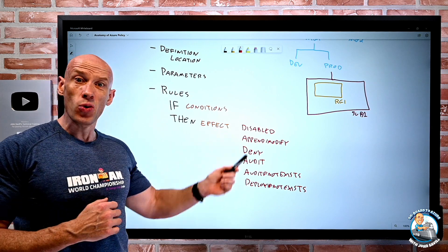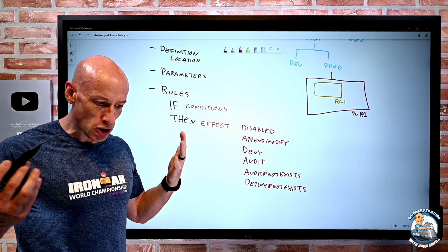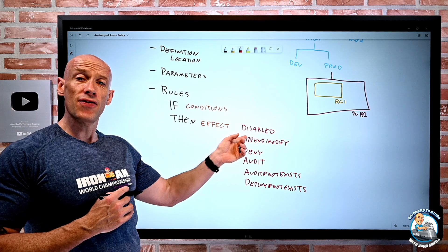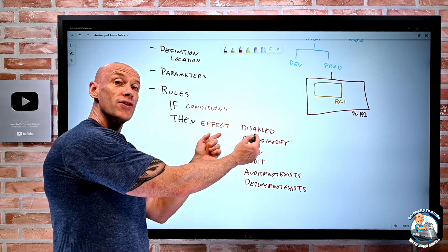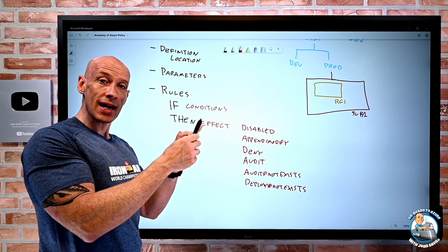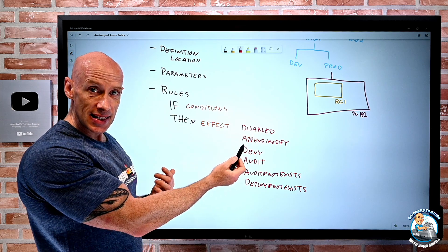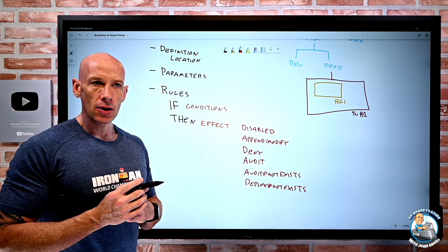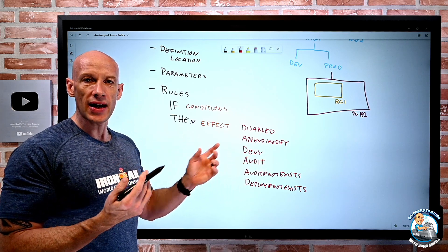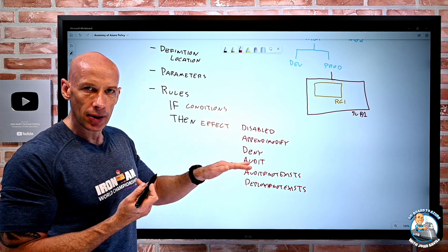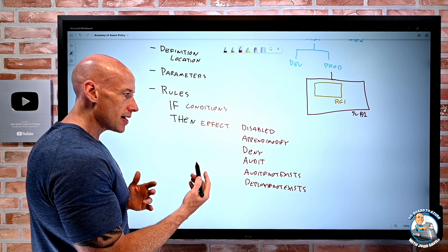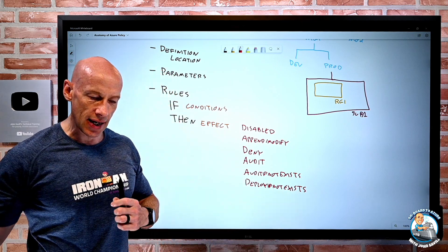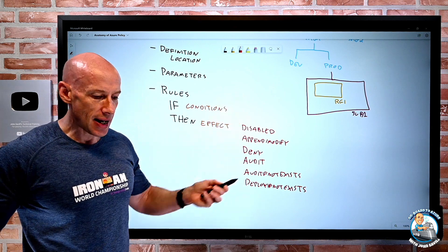These effects are evaluated in a specific order. If it's disabled, don't bother doing anything else. Next, look for append and modify, because these might resolve something — they might add a tag, for example, because later on there might be a policy that denies if the tag doesn't exist. So do the appends and modifies first, because maybe we make it right. Then look at denies. And then after it's not been denied, audit — I don't want to bother auditing if it's been denied. So there's a logical order, and then if the effect essentially is good, I can go and audit and deploy to do other things to maybe remediate.